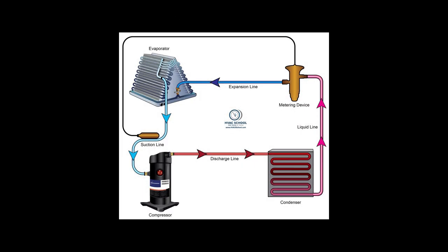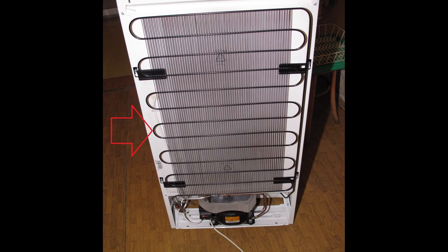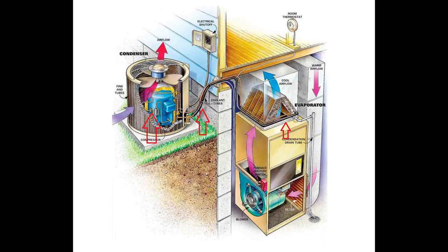Let's take a look at the general refrigeration cycle. There's six major components to every refrigeration system: the refrigerant itself, the compressor, the condenser, a metering device, the evaporator, and lastly, all the tubing that connects these components.